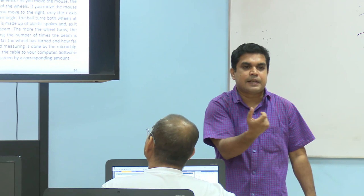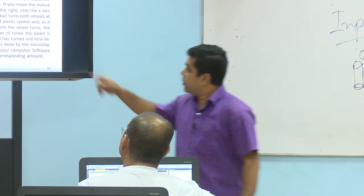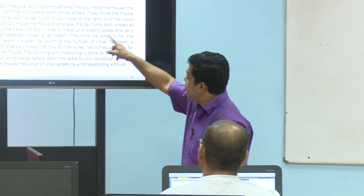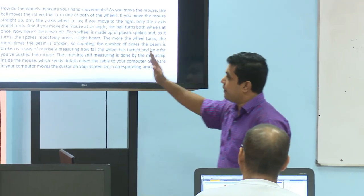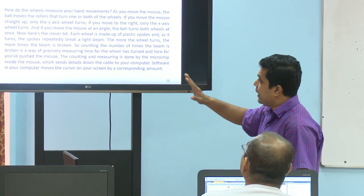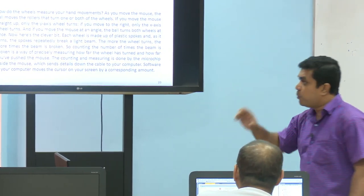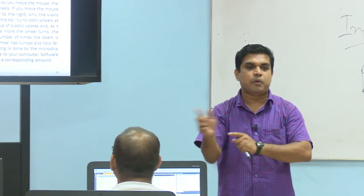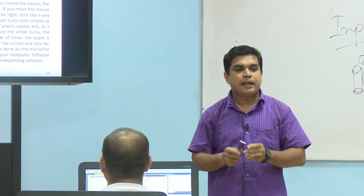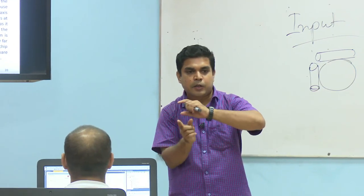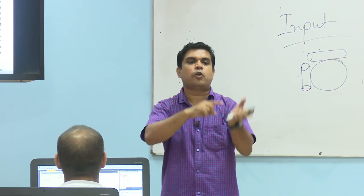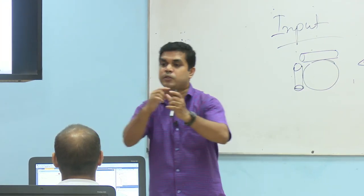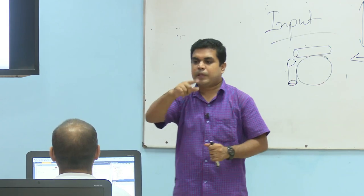If you move the mouse to the side, only the X axis will turn. If you move the mouse at an angle, then the movement is related to both coordinates — the X axis and the Y axis.